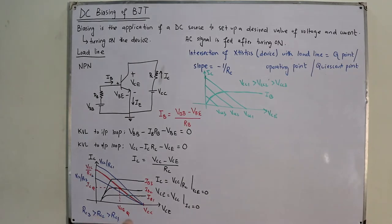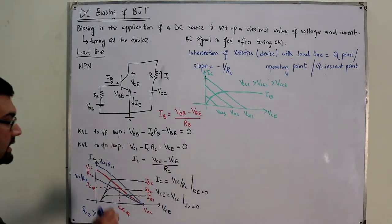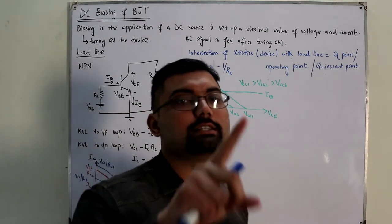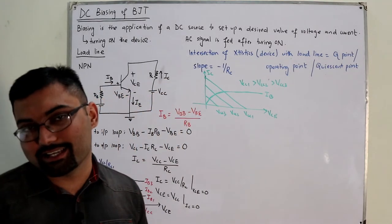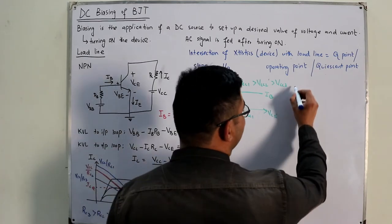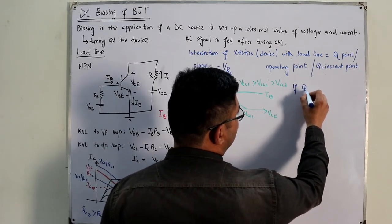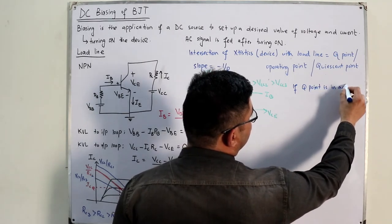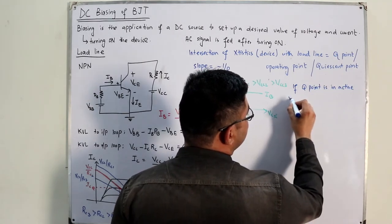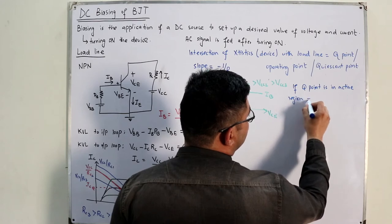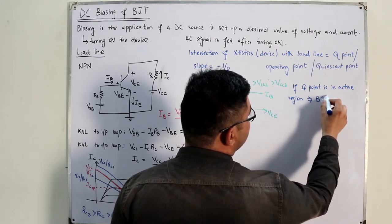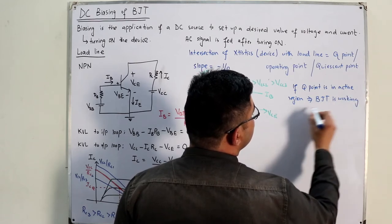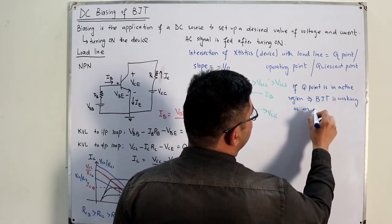If the Q point is in the active region, this implies that the BJT is working as an amplifier.